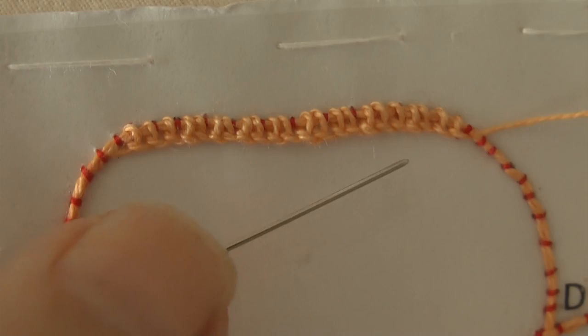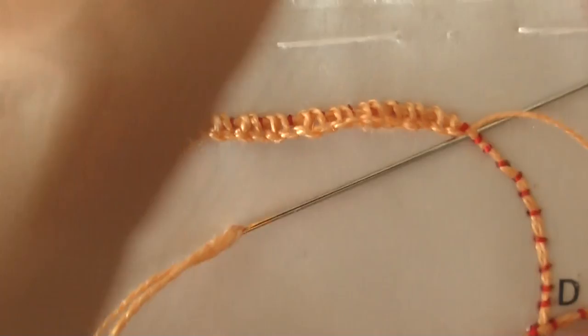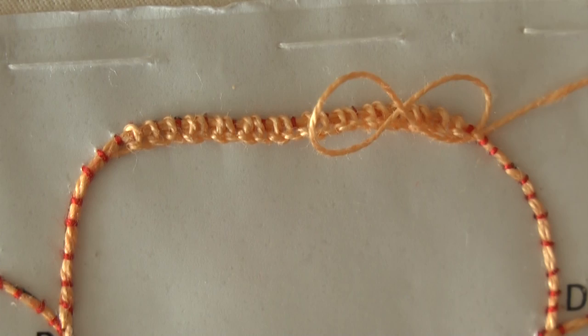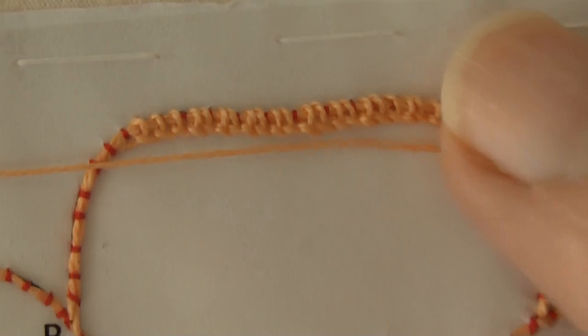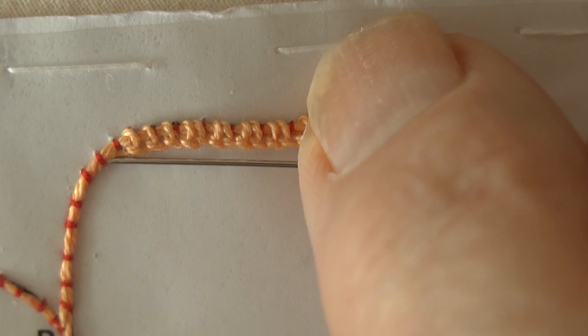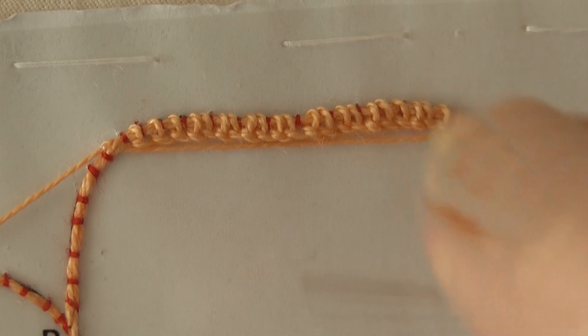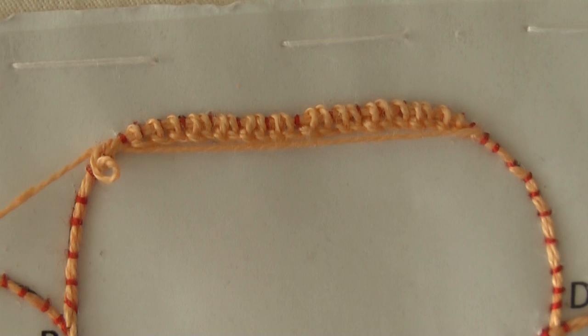Again, don't pull this too tight. Then we need to lay the thread back across the space underneath that row of stitches. So take your needle and thread out on the other side, and then take the needle and thread through again, and pull that tight.